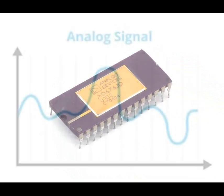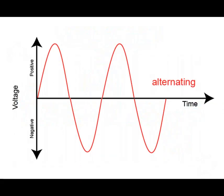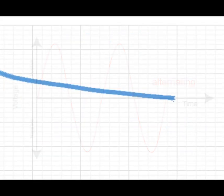An analog signal is a continuous, varying voltage that represents a real-world physical quantity, such as temperature, pressure, or sound.